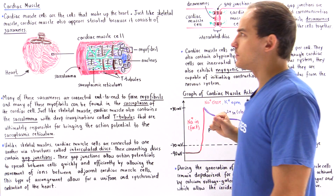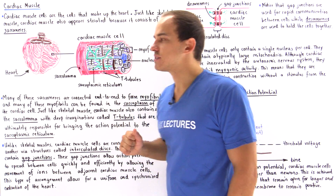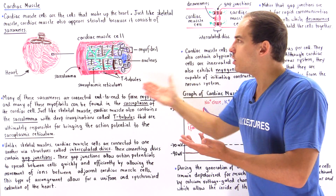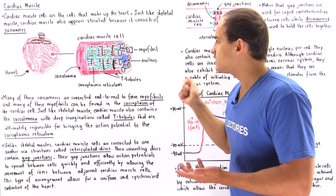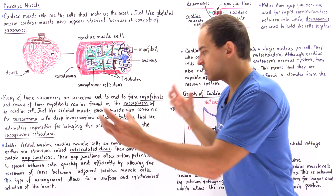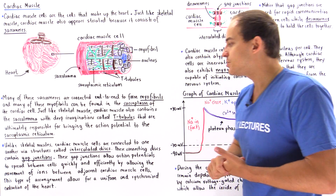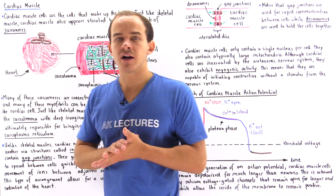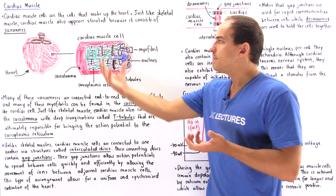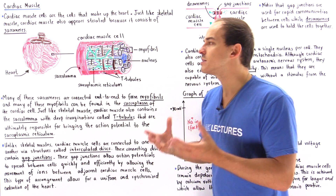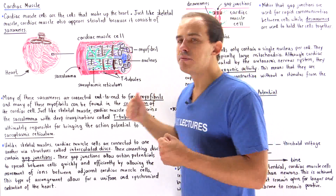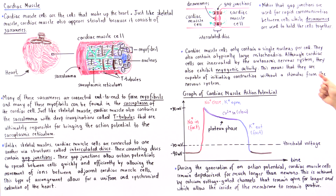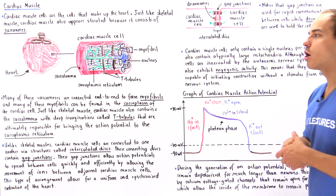This is the second important difference between cardiac and skeletal muscle cells. Cardiac muscle cells contain only a single nucleus and have these special connecting regions known as intercalated discs. Cardiac muscle cells also contain relatively large mitochondria, which makes sense because they are constantly working — constantly pumping blood throughout the body — and so they need to continually produce ATP.